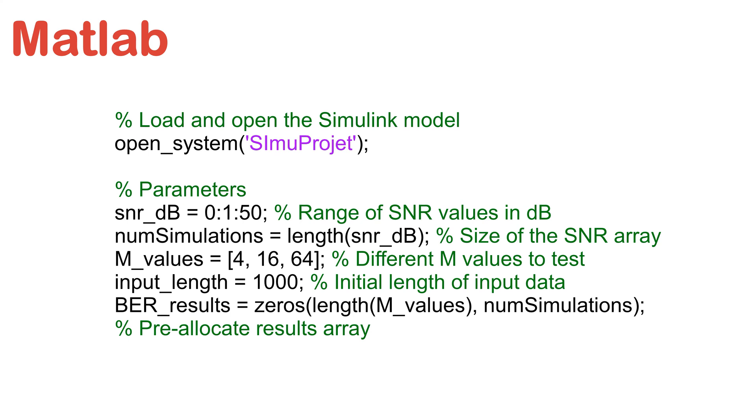M can take values like 4, 16, and 64, corresponding to 4-QAM, 16-QAM, and 64-QAM. Other parameters include the number of data bits to be transmitted, which is variable, and memory allocation for storing the BER values across different SNR levels.